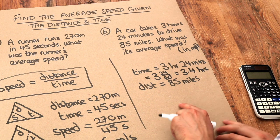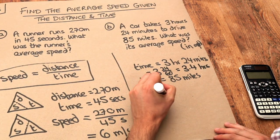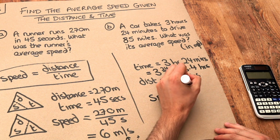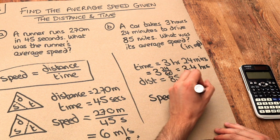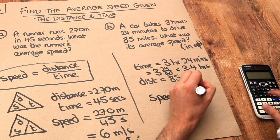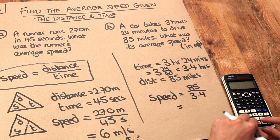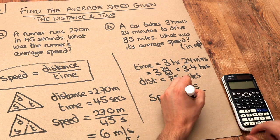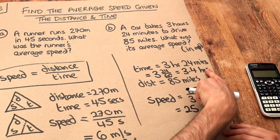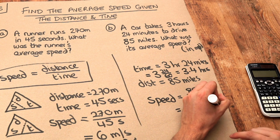Now we can use this value in our formula. The speed is equal to the distance of 85 divided by the time of 3.4. 85 divided by 3.4 is 25. The distance was in miles and the time in hours, so the answer is 25 miles per hour.